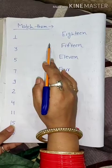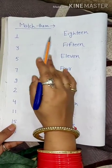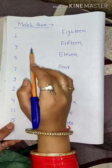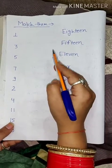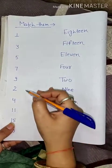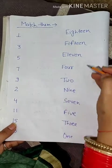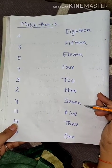Now, match them. As you can see, I have numbers on one side and on the other side the number names.